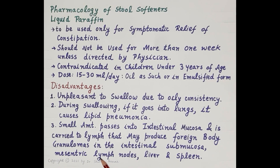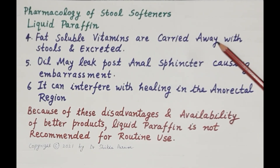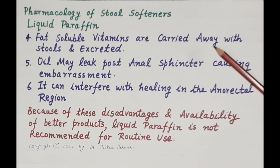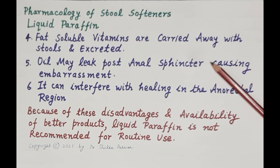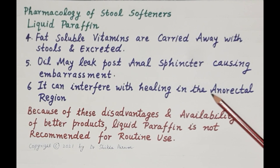These foreign body granulomas may also be produced in the mesenteric lymph nodes, liver, and spleen. Apart from this, liquid paraffin carries away fat-soluble vitamins into the stools, which may cause deficiency of fat-soluble vitamins on chronic use. Leakage of oil past the anal sphincters can cause embarrassment and may interfere with healing in the anorectal region.